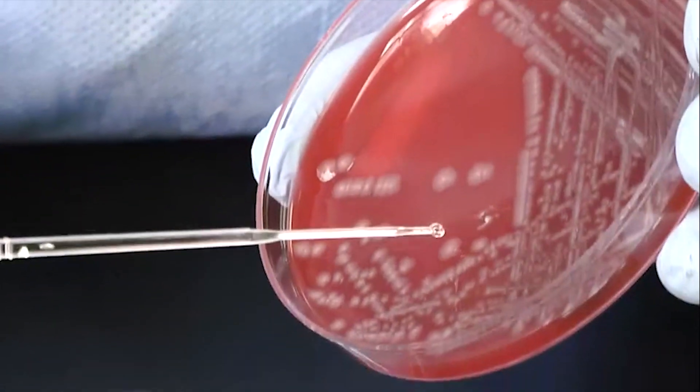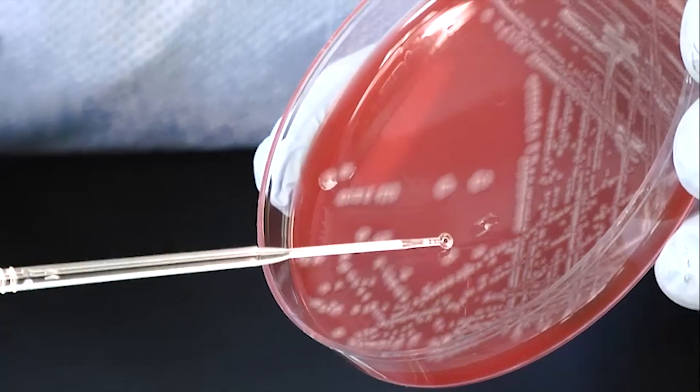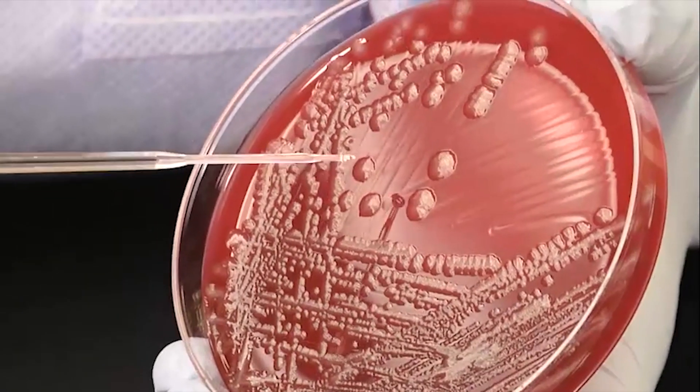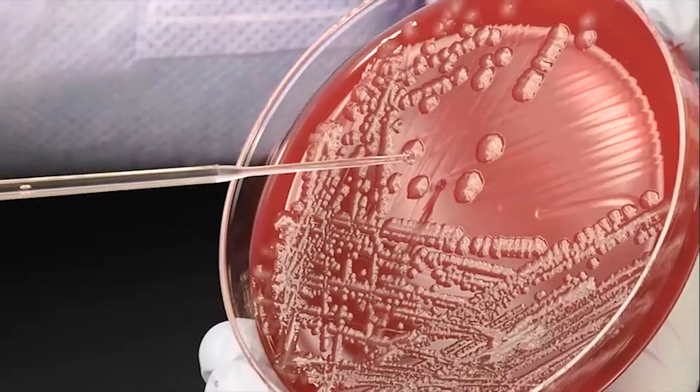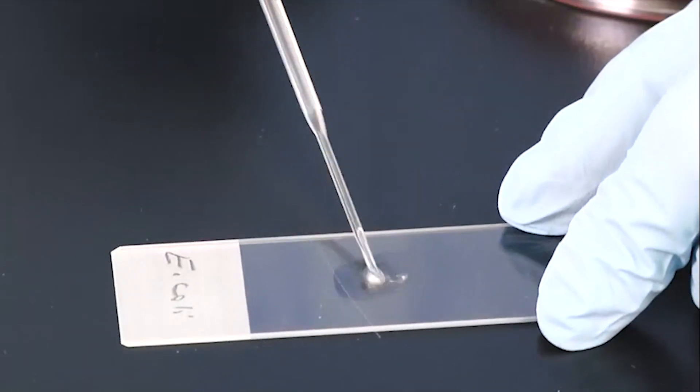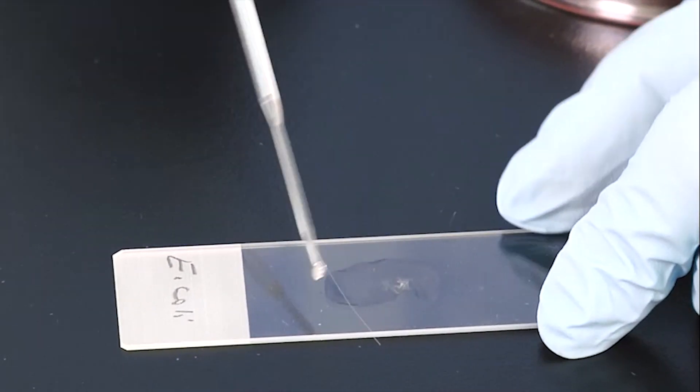This same procedure is followed when you are taking an isolated colony from culture media. You would put a drop of sterile water on a clean slide. Using a sterile loop, remove an isolated colony from the culture plate and gently mix it with the sterile water.